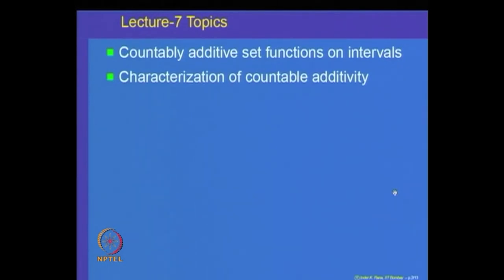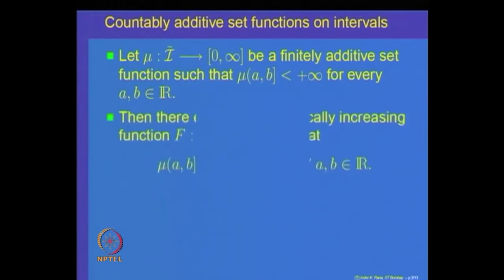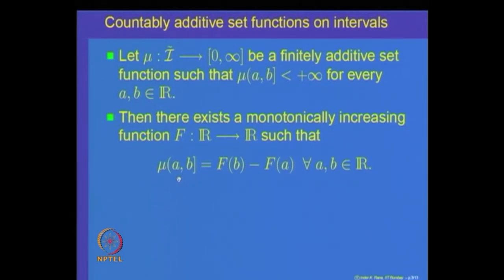Let us recall what we were proving in the last lecture. We were trying to show that if mu is a finitely additive set function defined on the collection of all left open right closed intervals, denoted by I tilde, with the property that mu of any finite interval is finite — that is, mu of (a, b] is finite for every a and b.